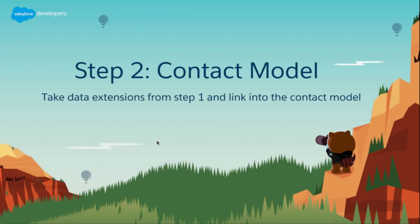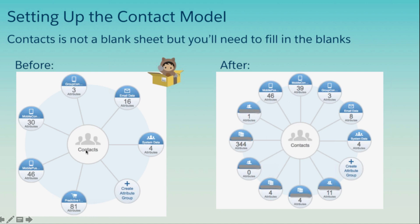On to step two — climbing up that mountain. Now you've got your data extensions in the marketing cloud, and we're going to link them into the contact model. You've got your 360-degree view of the contact — what we call our constellation view, which shows how all this data relates to one another. Out of the box you'll see some data and plumbing set up for you, but you'll want to customize it. For example, one customer added a shopping cart extension and linked it to the contact model — you care about what's in the cart for a specific customer so you can retarget them. You relate it back to the contact so that when you're doing a journey, a decision split, or segmenting for an audience, you have all the data needed.